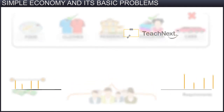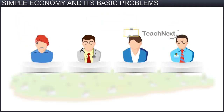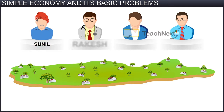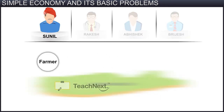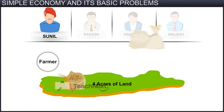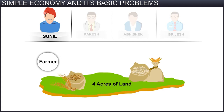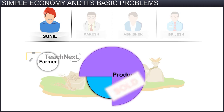Let us understand the meaning of economy with the help of an example. Sunil is a farmer who has four acres of agricultural land. He ploughs the land with the help of family members and farming equipment. He produces food grains like wheat and rice on his farm. A part of the produce is used for family consumption, while the surplus produce is sold in the market, which generates money for Sunil.